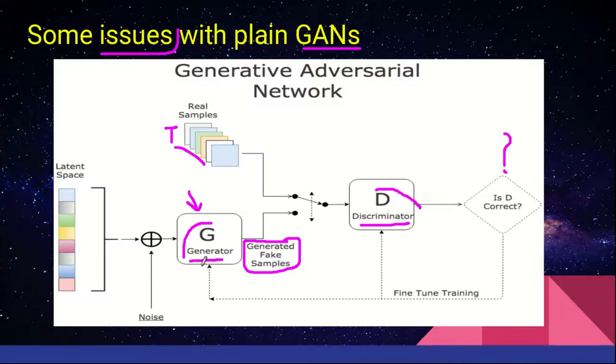But there is a simple solution here. We can add a constraint on the encoding network and force it to generate latent vectors that roughly follow a unit Gaussian distribution. It is the constraint that separates a variational autoencoder from a standard one.